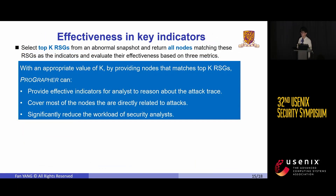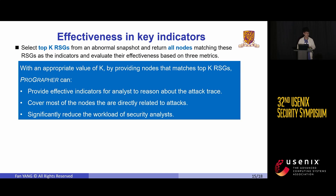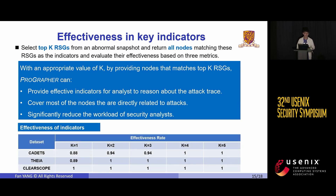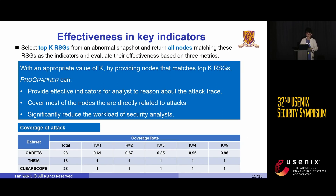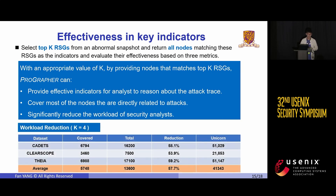One of the major distinctions of ProGrapher from other graph-level systems is its ability to pinpoint attack indicators. As demonstrated in earlier slides, for each abnormal snapshot, we select the top-K suspicious rooted subgraphs and return nodes matching these rooted subgraphs as indicators. We conducted three experiments to evaluate their effectiveness, and the results show that by selecting an appropriate number of indicators, ProGrapher can provide effective indicators for analysts to trace attack paths, covering most nodes directly related to attacks, while significantly reducing the workload of security analysts — seven-tenths less than Unicorn.